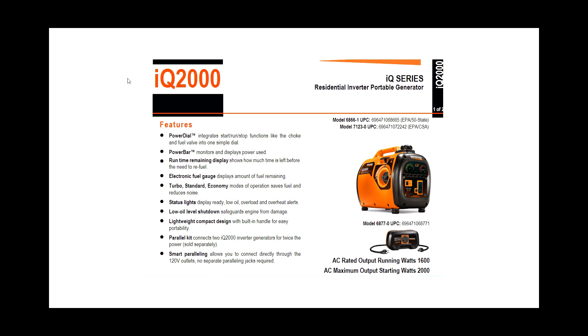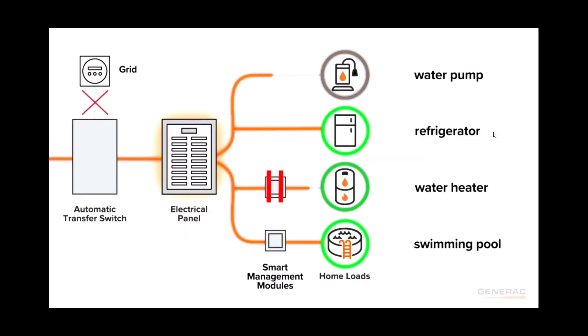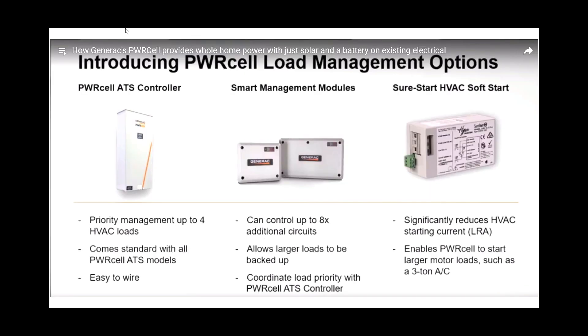We're going to be talking now about from the automatic transfer switch over here through the electrical panel and into the smart management modules that are also made by Generac. Those are feeding various loads or circuits in your house, like it shows here. The refrigerator could be the kitchen lights, could be the bedroom, could be anything in the house that's powered by electricity can be managed by this system. These are the power cell load management options that you'll need, the components between the automatic transfer switch and the circuits in the house.